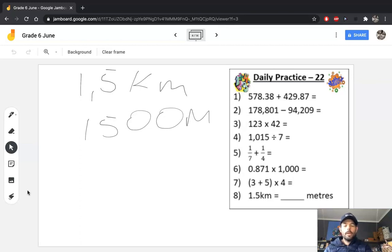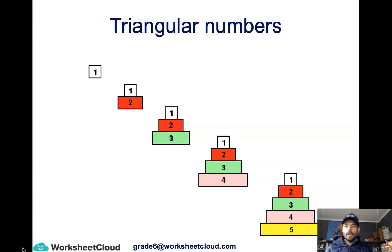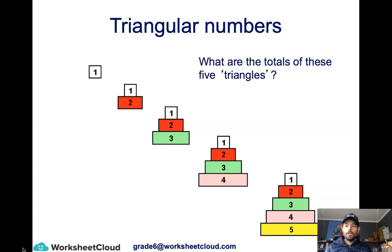Let's get into the main theme of today: triangular numbers and multiplying and dividing by numbers between 0 and 1. Looking at the diagrams on the screen, you should be able to see five triangles. Triangular numbers start with 1. Then I add two blocks, then three blocks, then four, then five. The totals of these five triangles are 1, 3, 6, 10, and 15 — those are your first five triangular numbers.